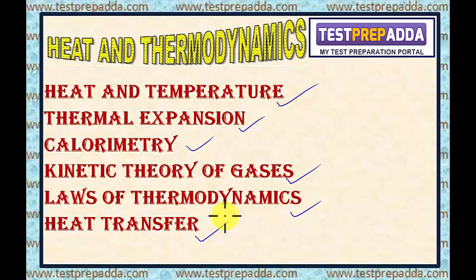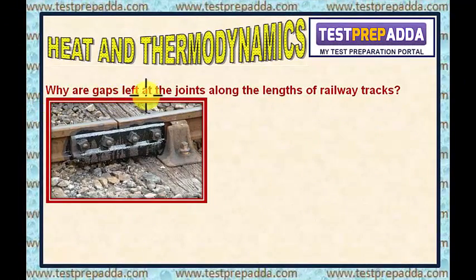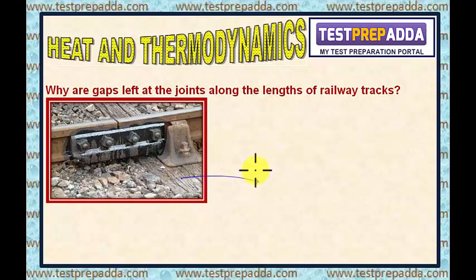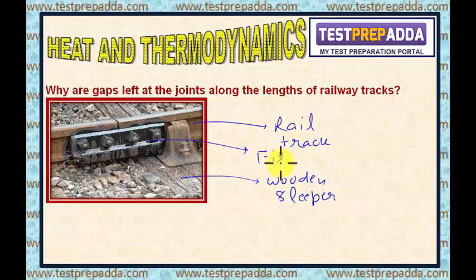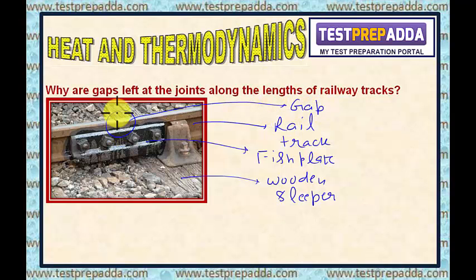After studying heat and thermodynamics, you will be able to answer many questions — like, why are gaps left at the joints along the lengths of railway tracks? You must have seen this many times. There is the wooden sleeper, the rail track, the fish plate, and this is the gap that I am talking about. You will be able to answer why we leave gaps along the lengths of railway track after studying heat and thermodynamics.